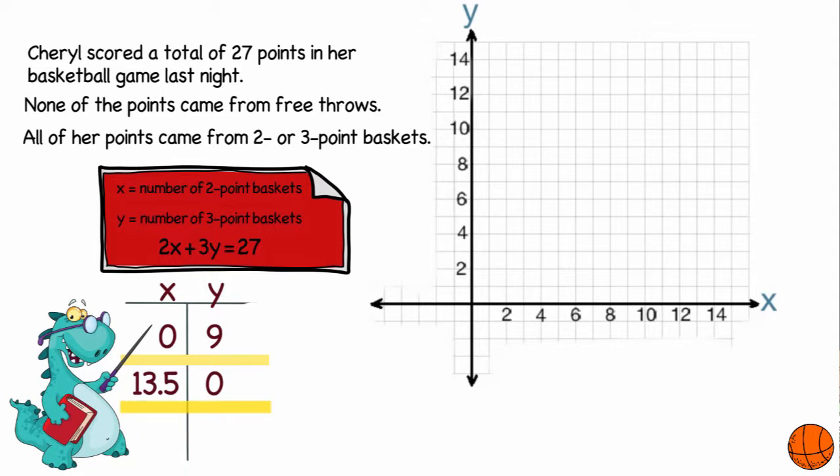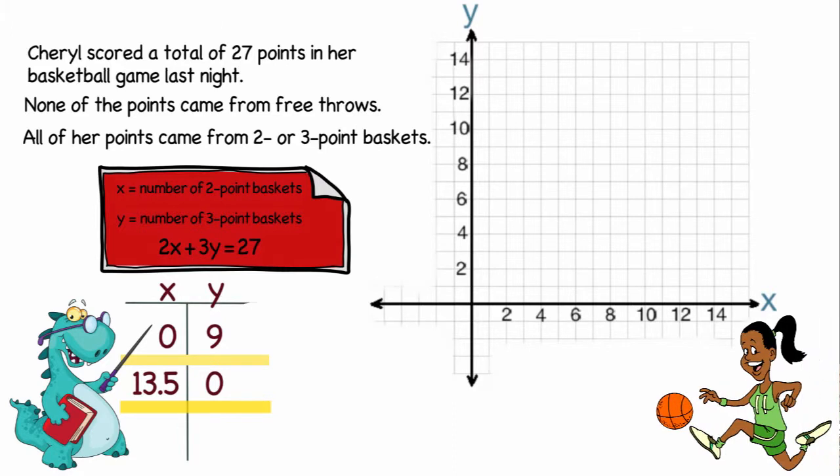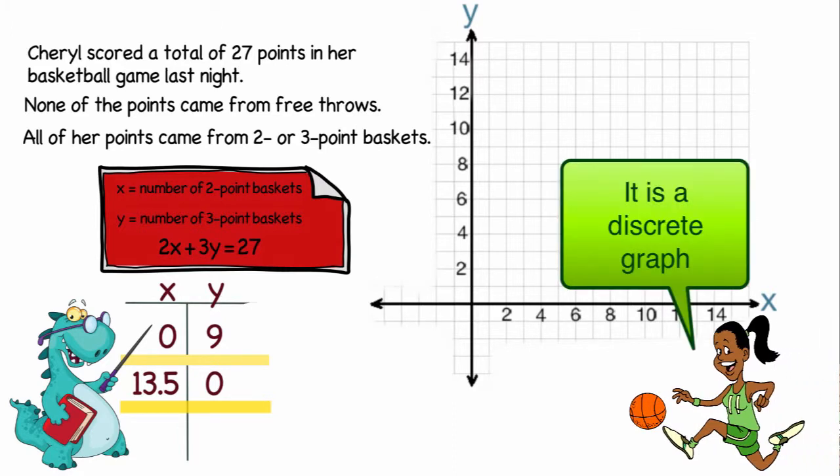But we'll use this information to help us find some other possible coordinates that we can use. So this graph is giving us all the possible combinations. However, since we know that we're dealing with baskets, we can only use the combinations that involve whole numbers for x and whole numbers for y.